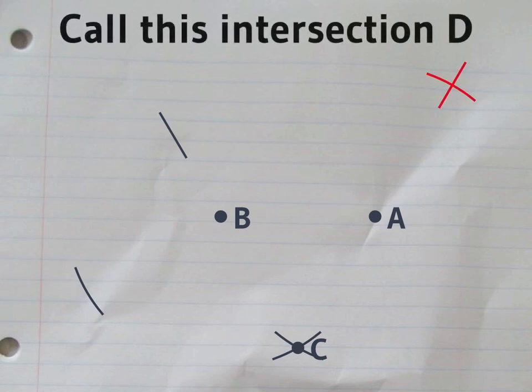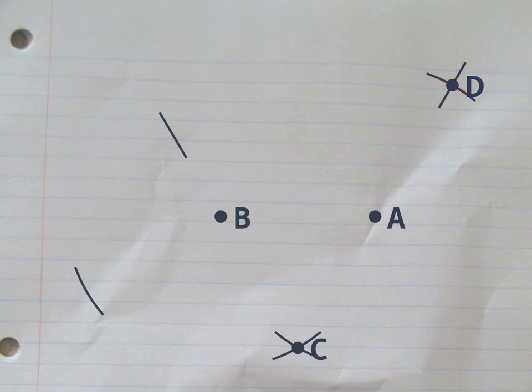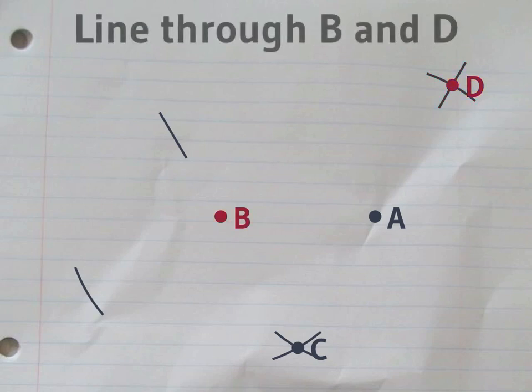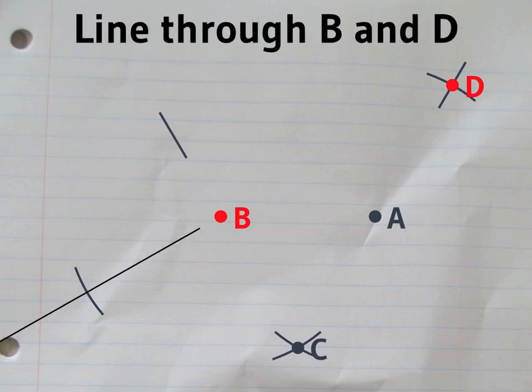This gives another intersection, which we'll call D. Now we need another straight line, this time through B and D.